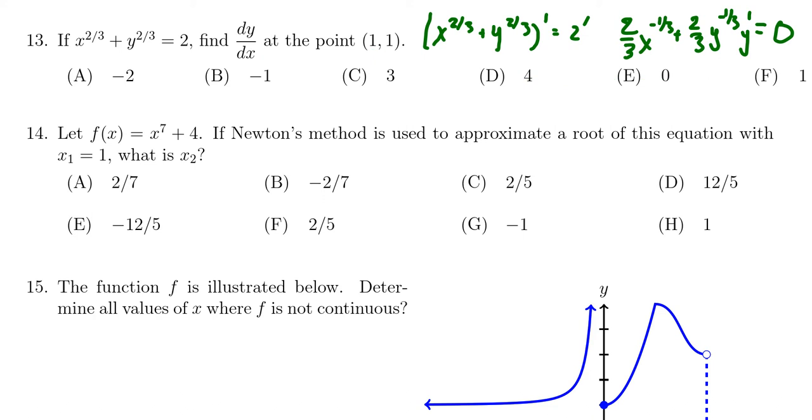In particular, 1 to the negative one-third power is going to be 1. So we see that this becomes two-thirds plus two-thirds y prime equals 0.